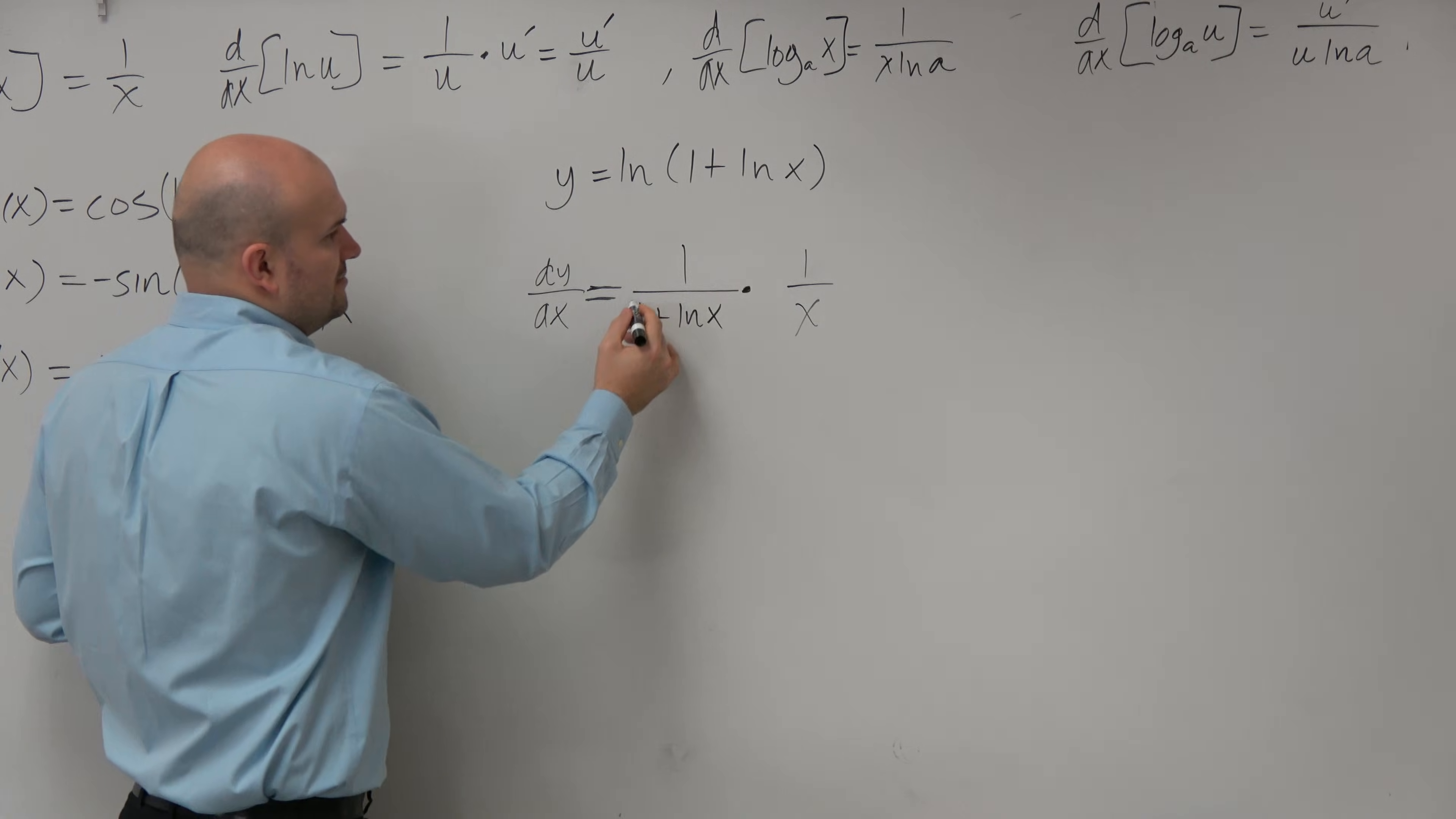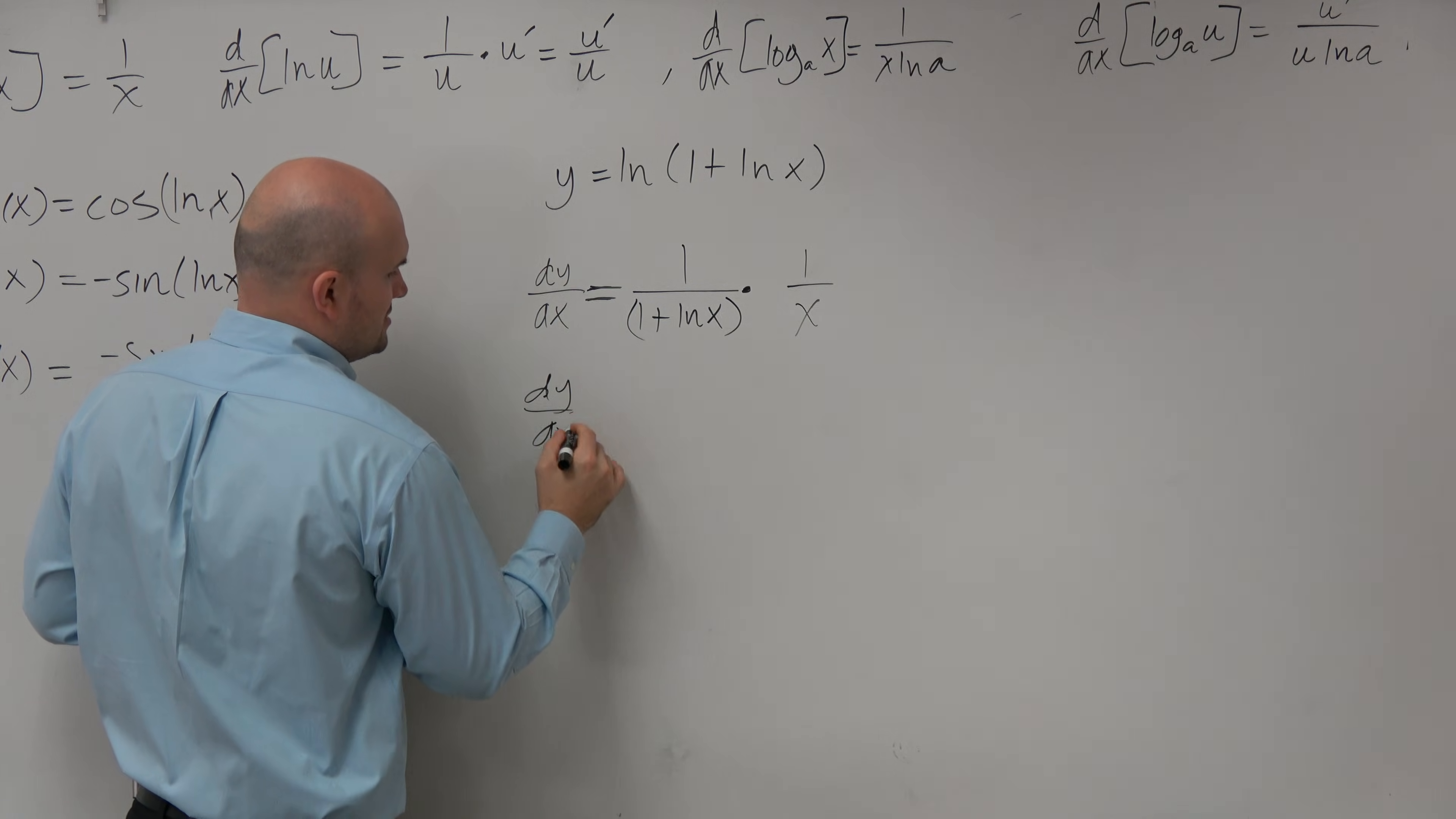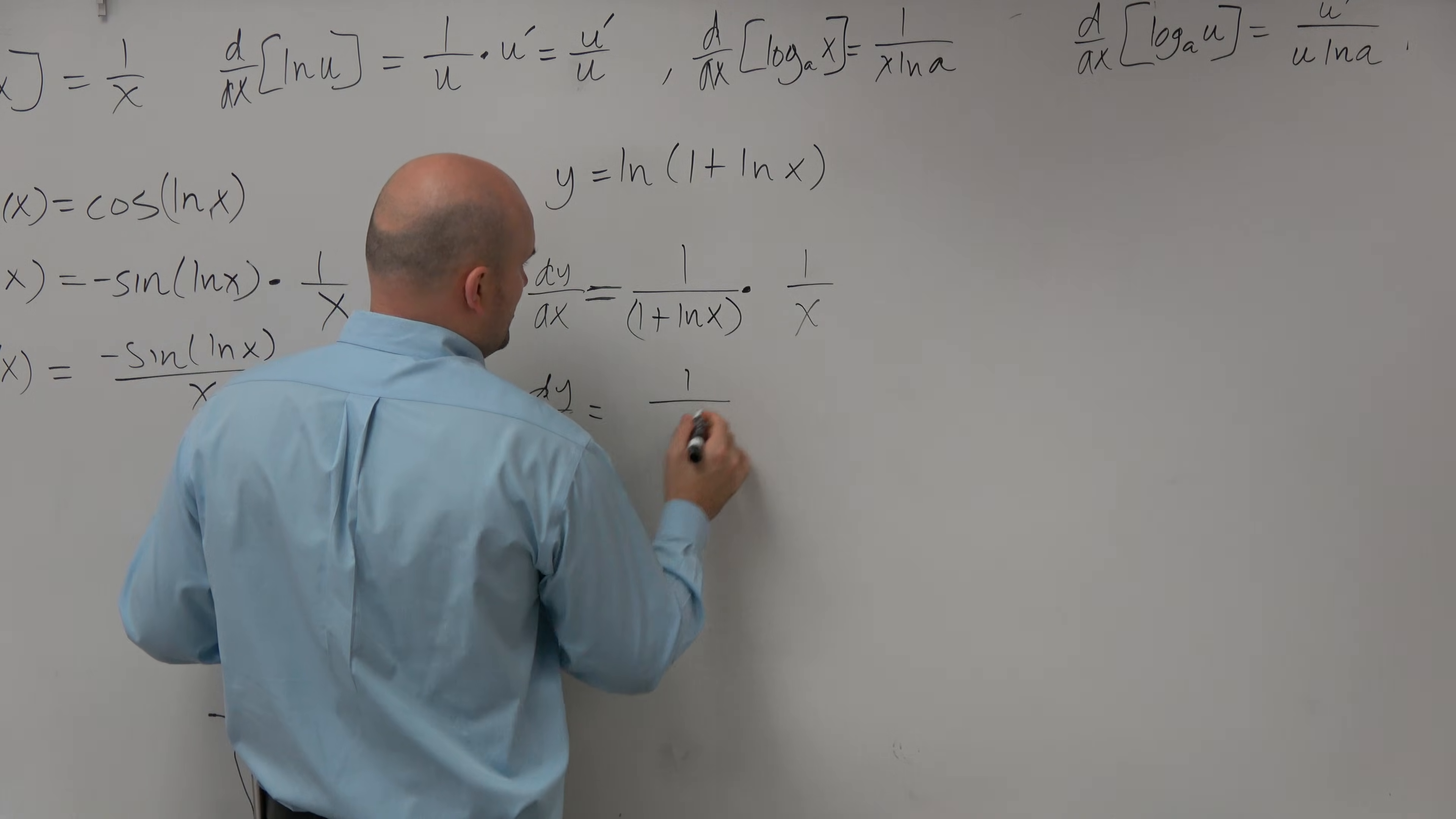So recognizing here, now all I'm simply going to do is just multiply them. So dy over dx is going to be 1 over x times 1 plus ln of x.